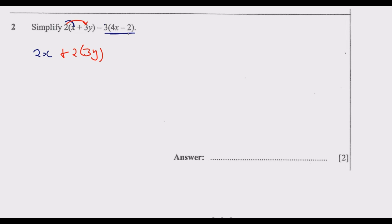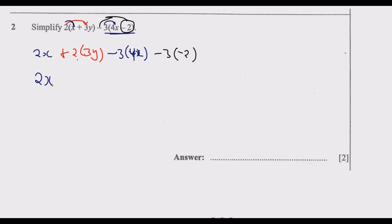We are now done with the first expression. Moving to the second: negative 3 multiplied by 4x — watch out for the signs and brackets — giving negative 12x. Then negative 3 multiplied by negative 2. So we have 2x, plus 6y from 2 times 3y, then negative 3 multiplied by 4x gives negative 12x.